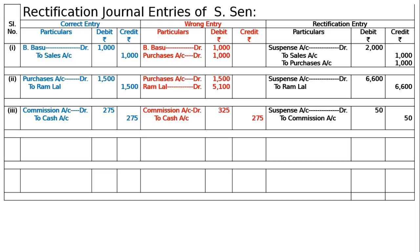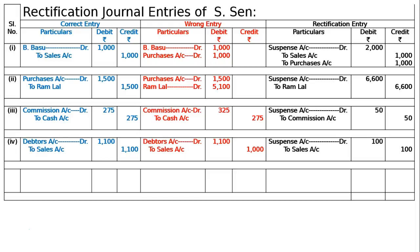Fourth entry: the sales book for the month of April was undercast by Rs.100. That is, debtors are debited to sales account. Say the total was Rs.1100 but only Rs.1000 was recorded — undercast by Rs.100. Hence, debtors account debited Rs.1100 to sales account Rs.1000. To rectify, write up sales by Rs.100: suspense account debited to sales account Rs.100. Narration: rectification entry passed to rectify a mistake in the sales account by Rs.100.